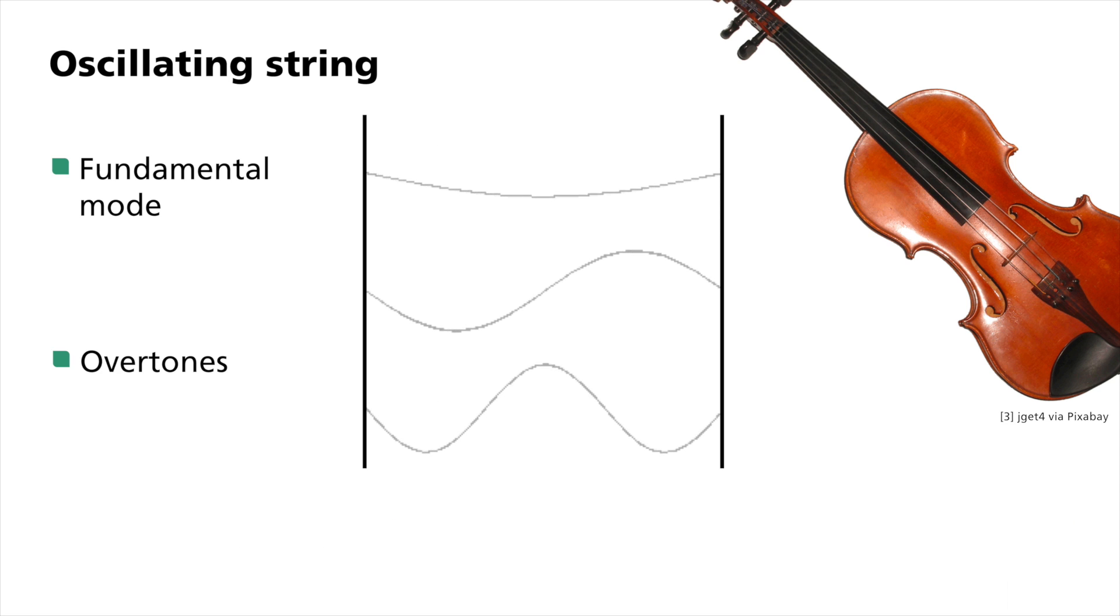Common to all modes is the fact that the position of the nodes and troughs is not dependent on the stimulus, but instead exclusively on the boundary conditions. These include, for example, the length and thickness of the string. Each free oscillation or normal mode corresponds to an eigenfrequency at which the oscillation takes place.